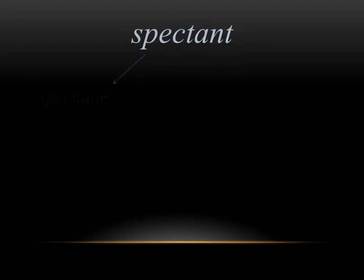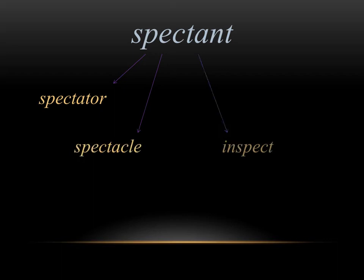From spectant, we get the words spectator, spectacle, inspect, and speculate in English. Spectant is a verb that means they look at or they watch, and it holds that same meaning in English. A spectator is someone who's watching something, just like a spectacle is something that you watch.